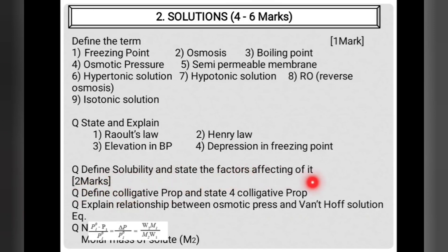Define solubility and explain the factors affecting it — that is for two marks. For colligative properties, enlist any four: elevation in boiling point, depression in freezing point, and osmotic pressure. The relationship between osmotic pressure and van't Hoff factor may be asked. Molar mass M₂ can be calculated from these colligative property formulas.